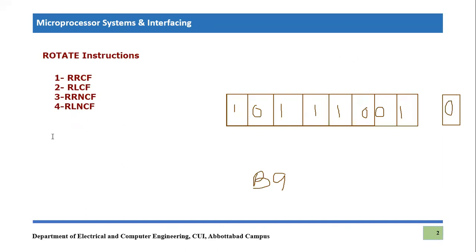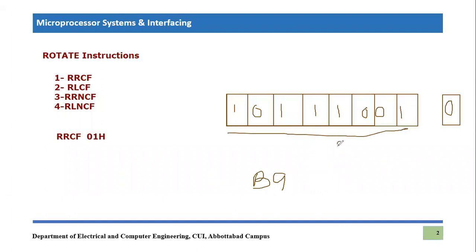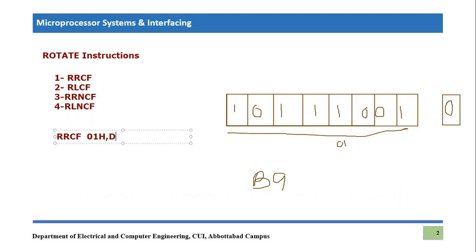We are going to apply the RRCF instruction. This file register location is at address 01 hex. So we are applying RRCF on this file register. After the file register we mention the destination bit — the destination can be the file register or the working register. We can apply this operation and save the result in the working register or in the file register. Let's say we mention F, so the result will be stored back in the file register.